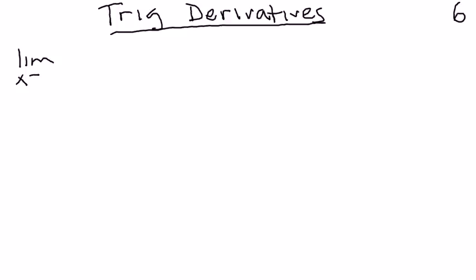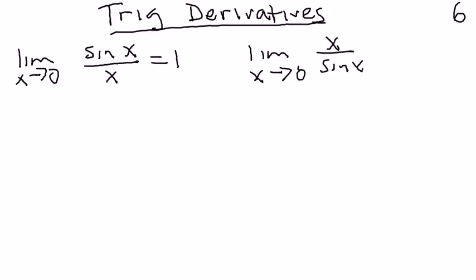If you take the limit as x approaches 0 of the sine of x over x, that's going to be 1. If you were to do the reciprocal of that, the limit as x approaches 0 of x over the sine of x, that's also 1 because the reciprocal of 1 is 1.